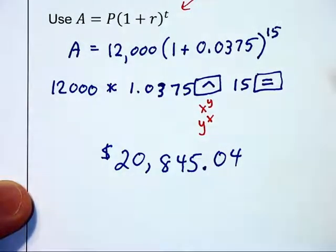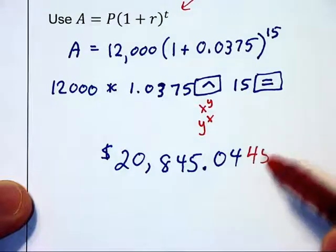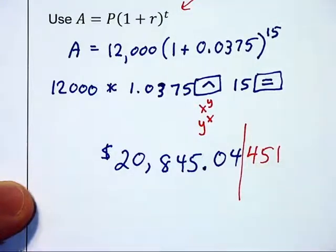Now technically your calculator is going to have this extra 4, 5, 1 on the screen, but we are rounding to the nearest cent here.